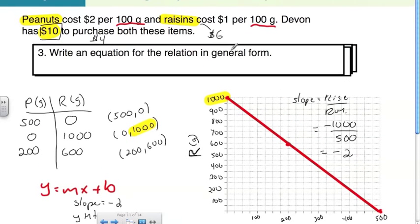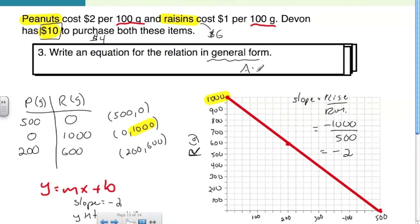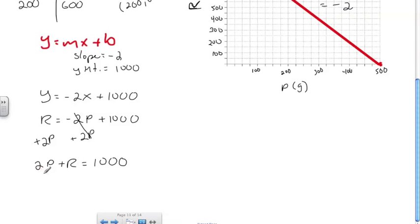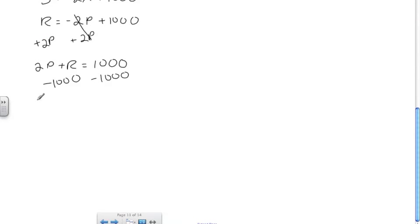That's not in general form yet, and the question asks for general form: ax plus by plus c equals 0. I'll move the negative 2p first by adding 2p to both sides — since p represents x, it goes to the left. That gives 2p plus r equals 1,000. Then subtract 1,000 from both sides: 2p plus r minus 1,000 equals 0.